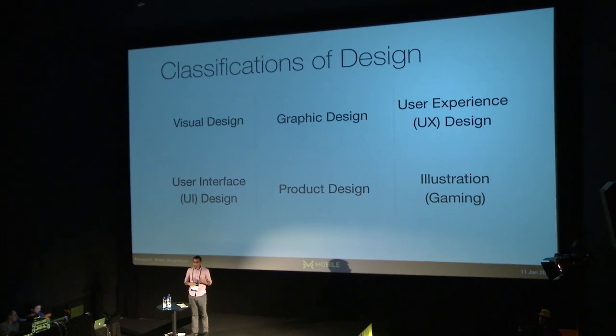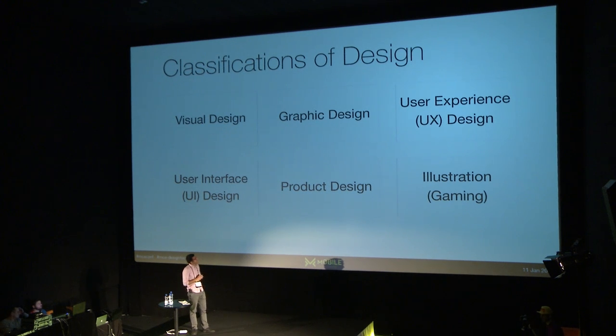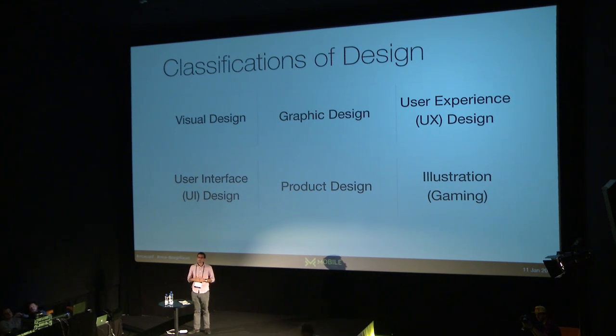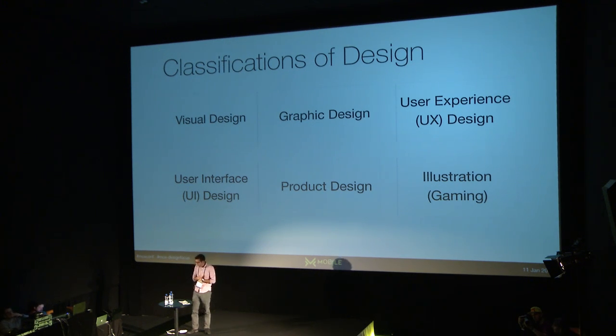There are a lot of different classifications of design — and this is not even an exhaustive list. Interaction design is a popular buzzword that can be combined with user interface design or UI design. A lot of people often confuse UX design with UI design, or graphic design with visual design. Then we have product design, product managers, and project managers. I tried to highlight six categories, and we'll go through those and then get started on how the design process works and how to, as a developer, focus on design in every step of the process.